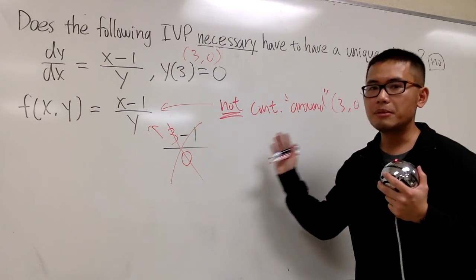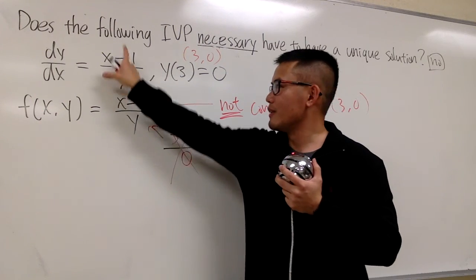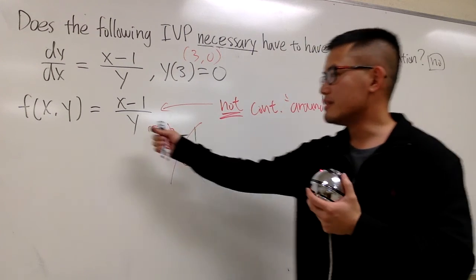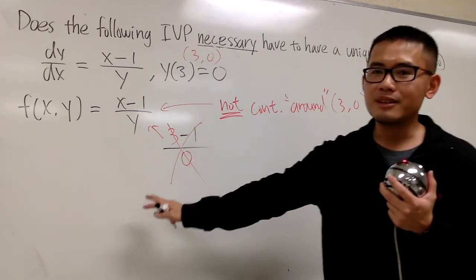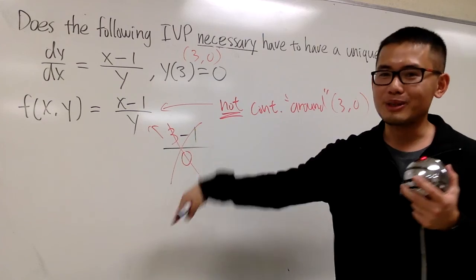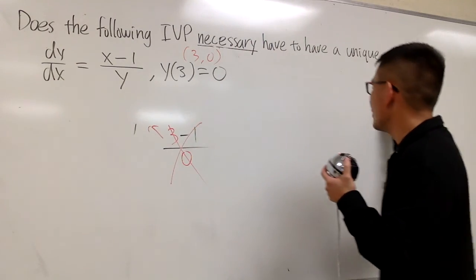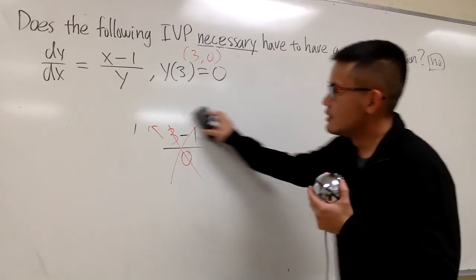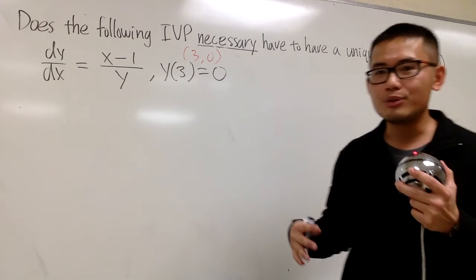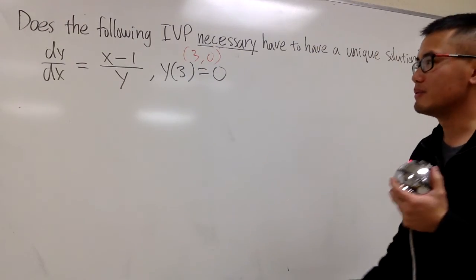I just cannot say anything, because the theorem failed — because the original function f right here is not continuous. So end of story. If f is not continuous, you don't even need to bother checking the partial with respect to y. And since I don't know how many solutions I have, when I solve I have to be extra careful.